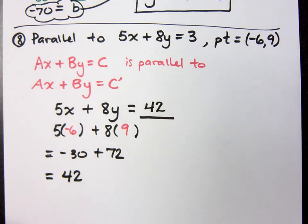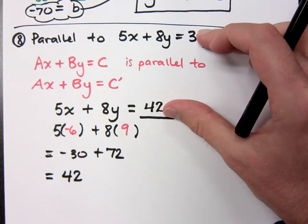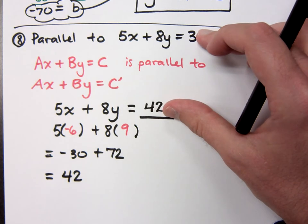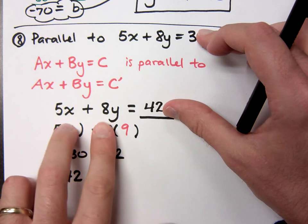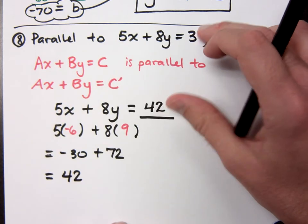So I put 42 there. Is that going to be true? Is this going to work out? Would you guys agree that these two equations would be for parallel lines? They're going to have the same slope because it's 5x plus 8y and 5x plus 8y. And you know they're going to have different y-intercepts, right?